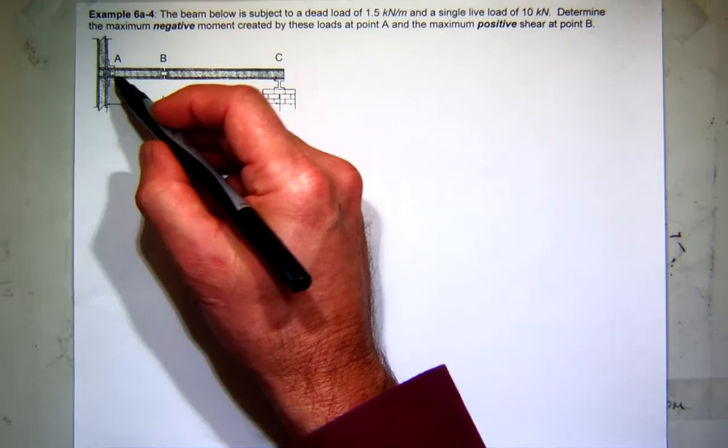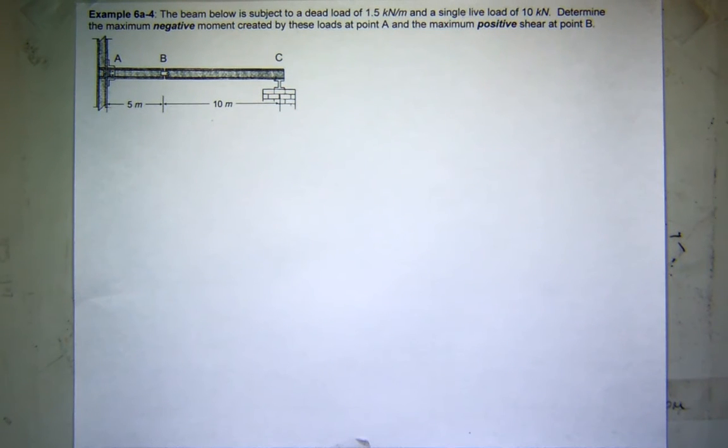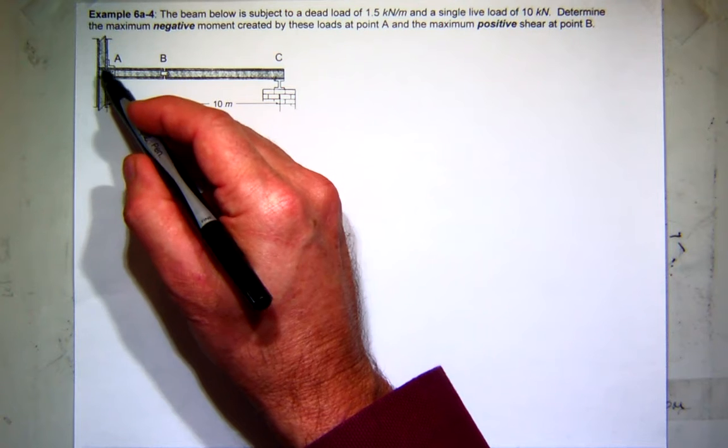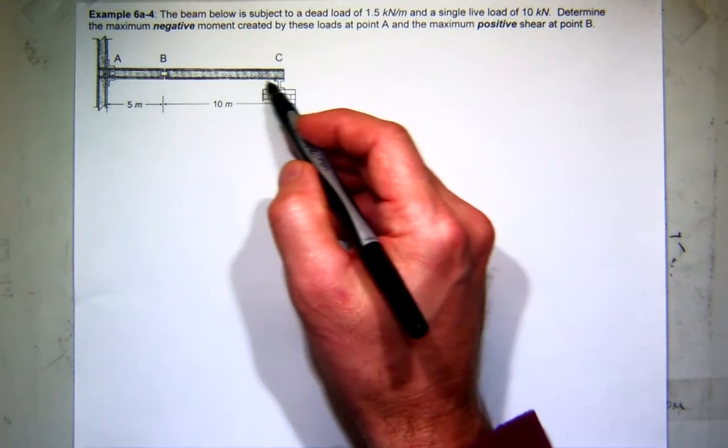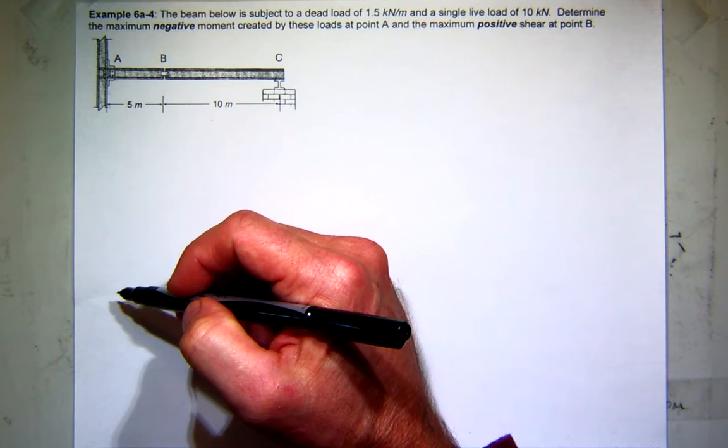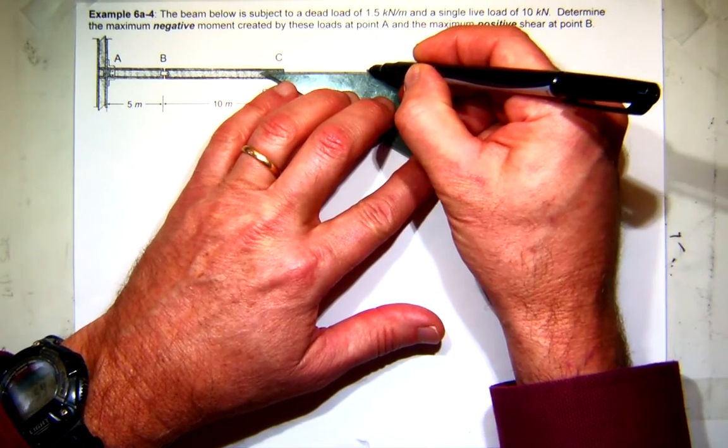I want to find the moment at A as a function of this thing. So, let's... That's a pin? No, that's a fixed connection. Fixed connection, hinge, roller. What I'm going to do is come over here and draw both segments of this structure.